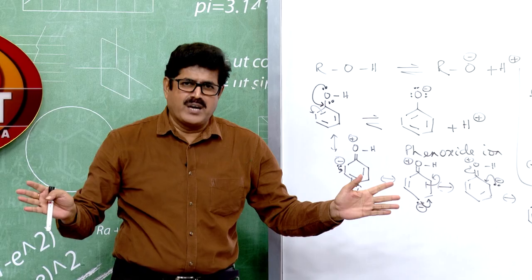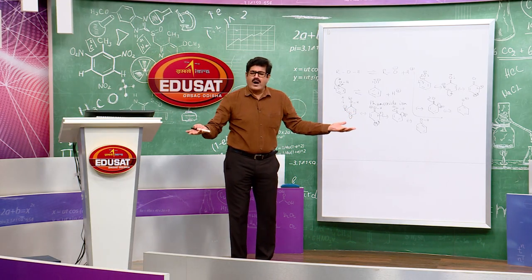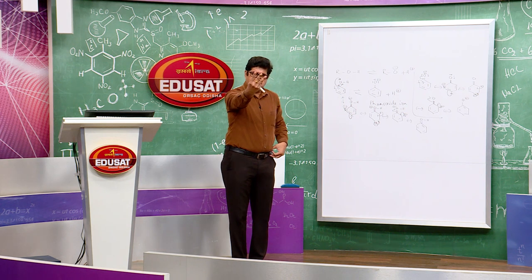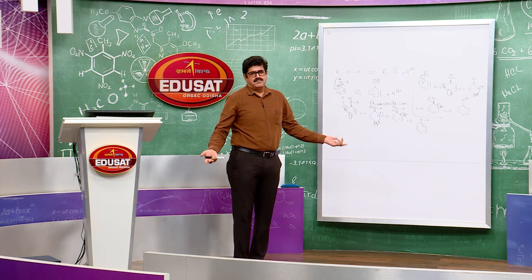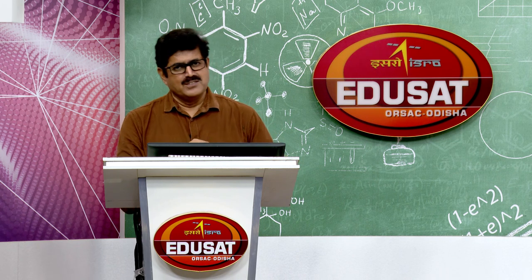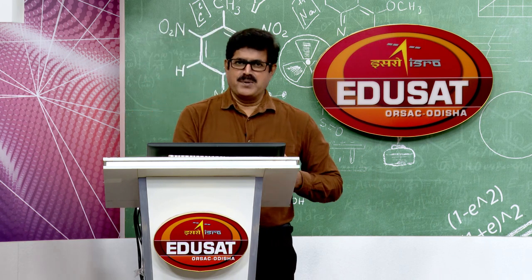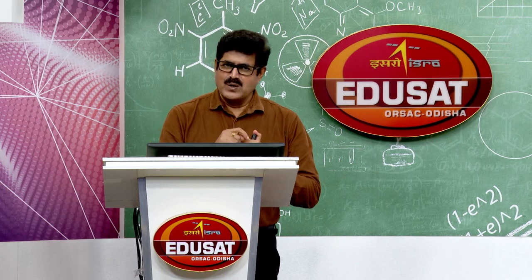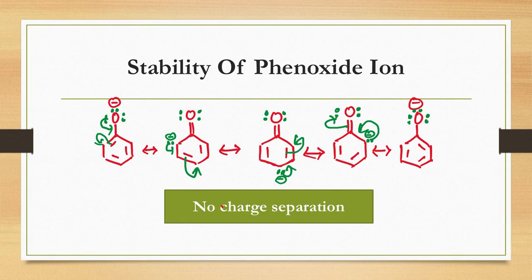If asked to discuss the acidic character of phenol: draw resonating structures of phenol and phenoxide ion, then explain that phenol has three charge-separated resonating structures making it unstable, while phenoxide ion is more stable with no charge-separated structures — this drives ionization forward and gives phenol its acidic character.